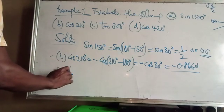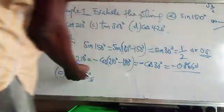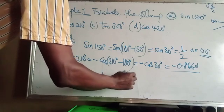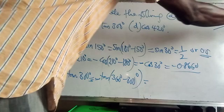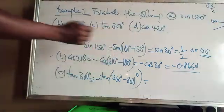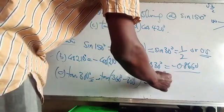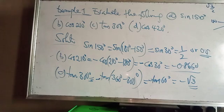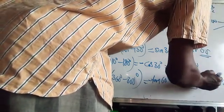For tan 300°: 300° is between 270° and 360°, which is the fourth quadrant where cosine is positive. So tangent will be negative here. We write −tan(360° − 300°) = −tan 60°. Tan 60° = √3, so the answer is −√3, which is approximately −1.732.